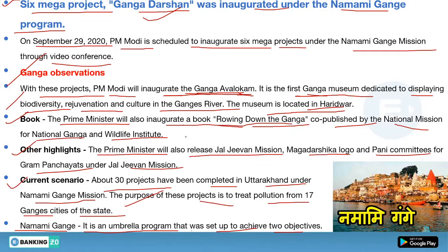Also recall that the Jal Jeevan Mission was discussed in relation to gram panchayats. About 30 projects have been completed in Uttarakhand under the Namami Ganga Mission. If you have any doubt, ask me in the comment box.